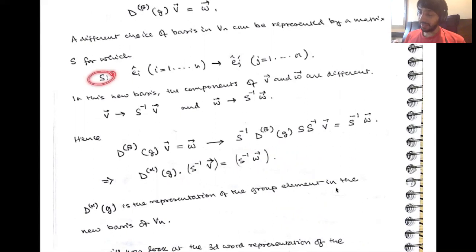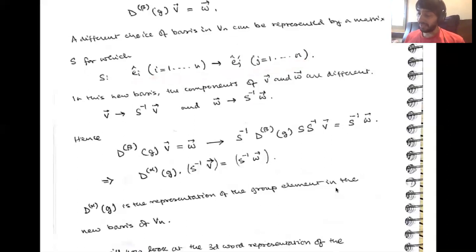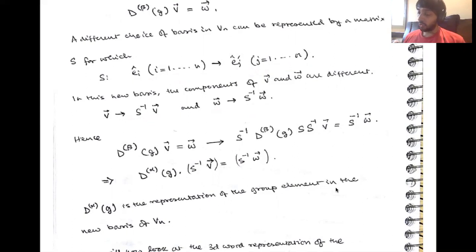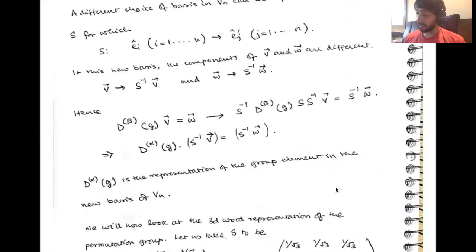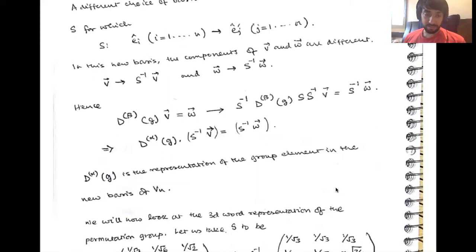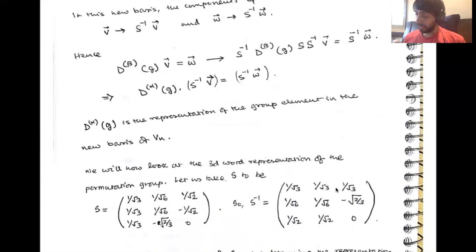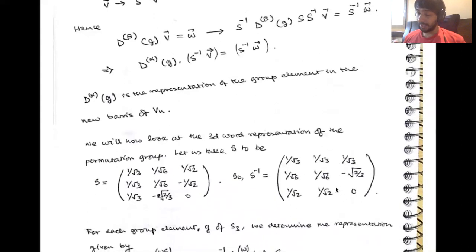At the end of the day, if you go through with this, you see that D-alpha implements the transformation of the vectors v in the changed basis. So D-alpha is the representation of the group element in terms of this new basis of V. Now let's look at S3 again and look at this word representation.